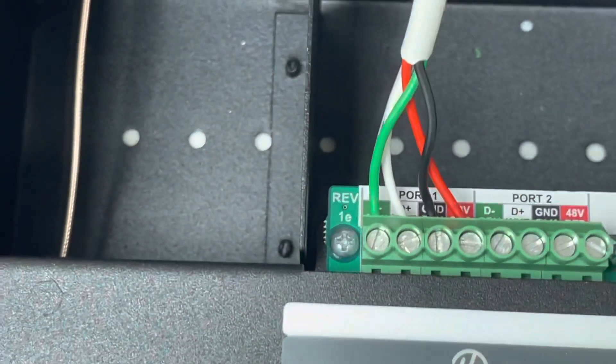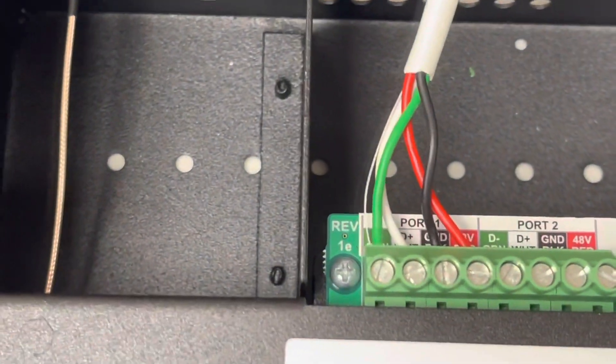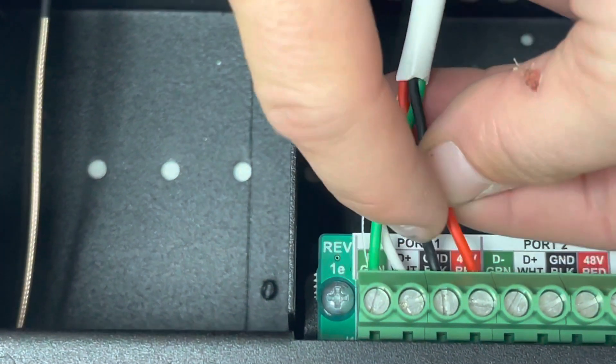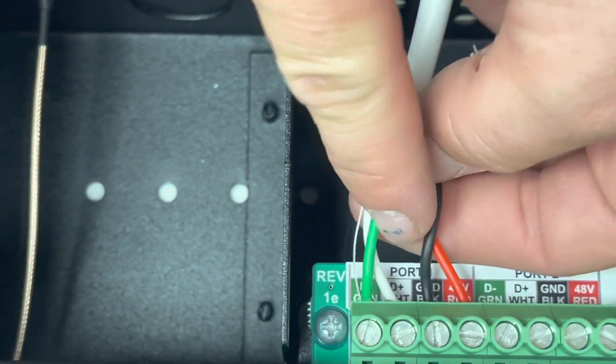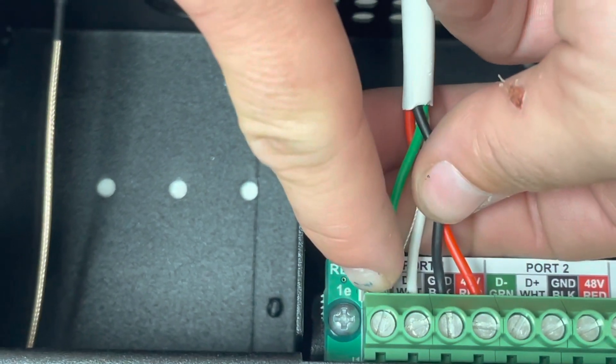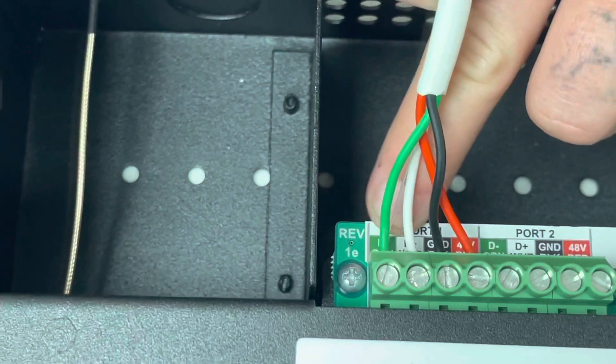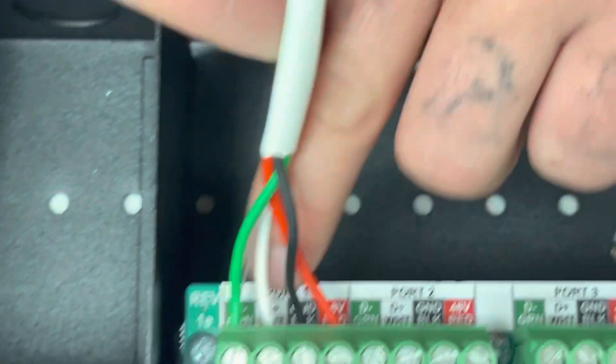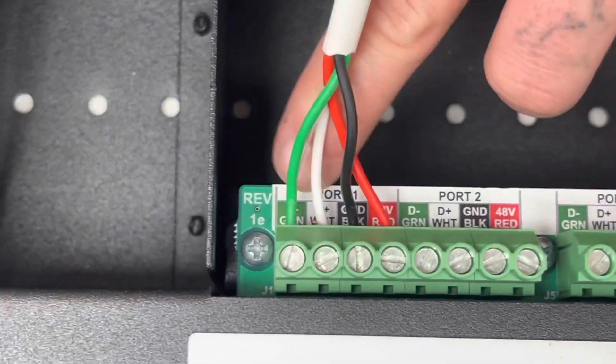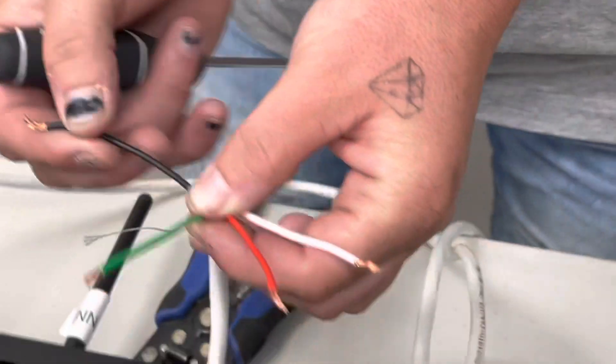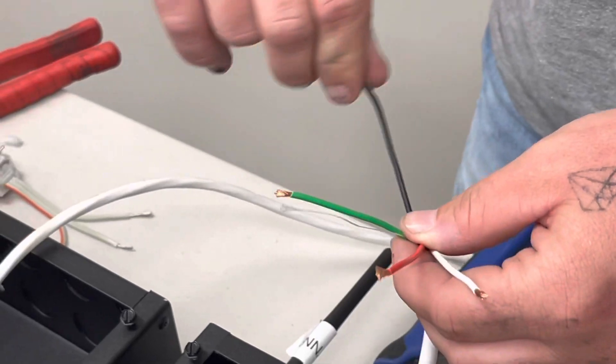Alright, now it's going to be color for color. We've got red to red, black to black, white to white, and green to green. On the controllers they already say what color you want to put in the port if it's transmitted like we're doing.